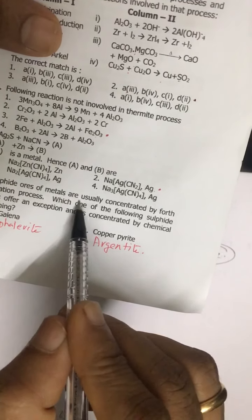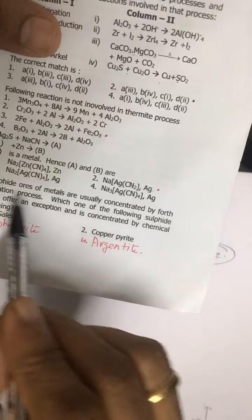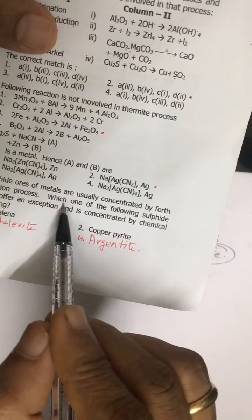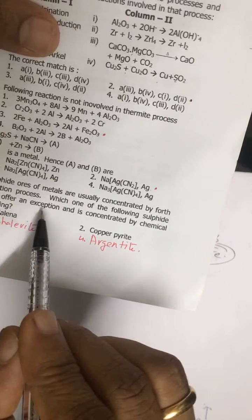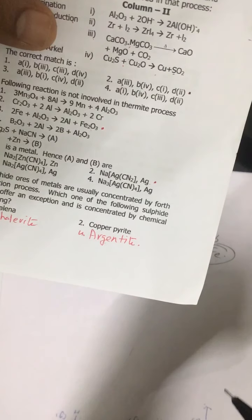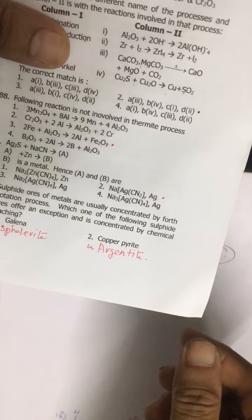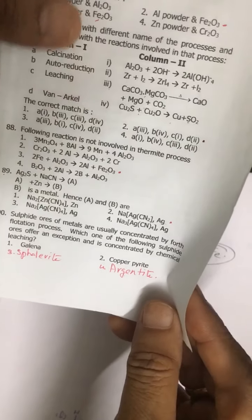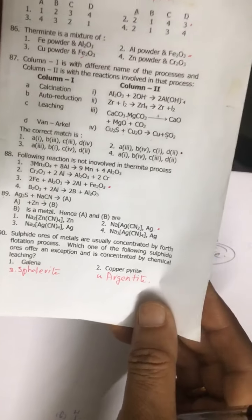Question 90: sulfide ore of metal are usually concentrated by froth flotation process. Which one of the following sulfide ores is an exception? It is malachite - fourth option. So, this is it, thank you.